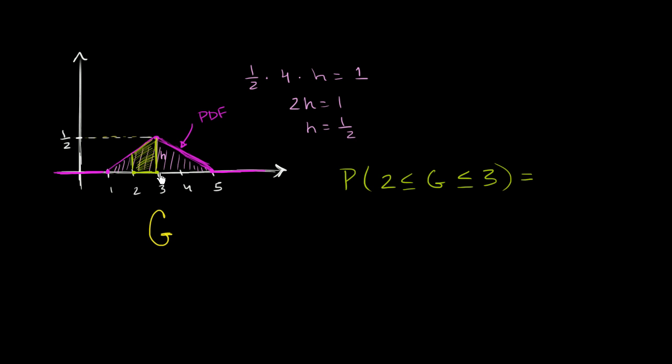So the one way I think about the area of a trapezoid, and especially when it's oriented this way, it's the mean of the two heights, the two different heights, times the base. So the base here is 1.